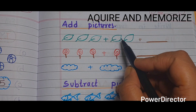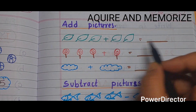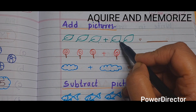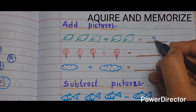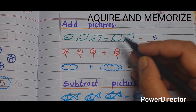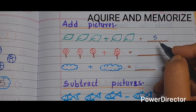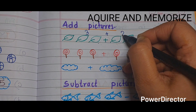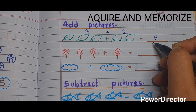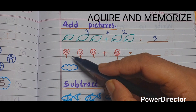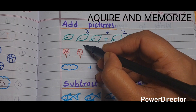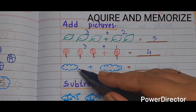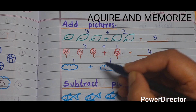Next section is 'add pictures'. Some pictures are given with an add sign in between, so we have to count and add the two groups. For example, 3 plus 2 equals 5. Next: 3 plus 1 equals 4. Next: 1 plus 1 equals 2.